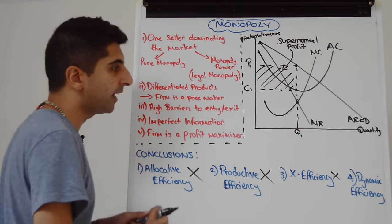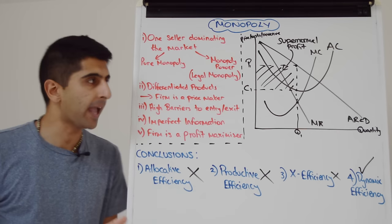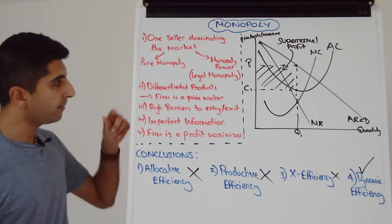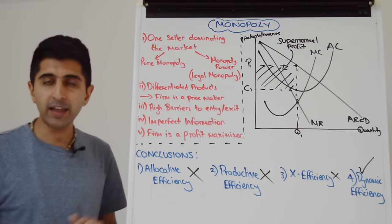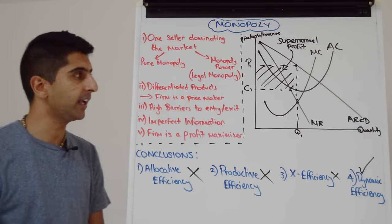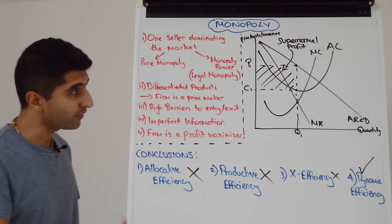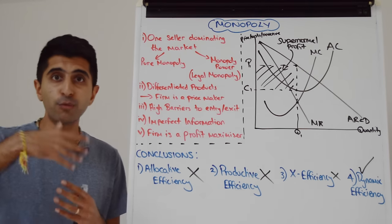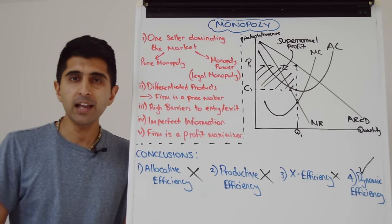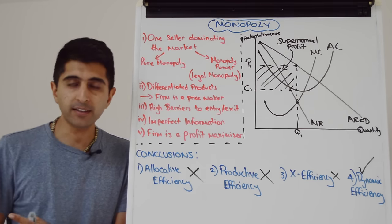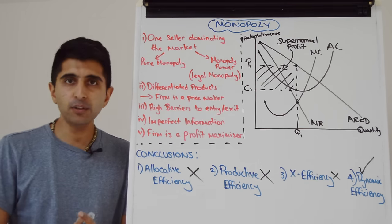However, there is potential for dynamic efficiency because there are long run supernormal profits being made. No firms can come in because of high barriers to entry. And also there is imperfect information. So that keeps other firms out of the market, which allows these supernormal profits to persist in the long term. And because of that, this monopolist could reinvest those profits back into the company in the form of new technology, in the form of innovative new products, in the form of research and development.